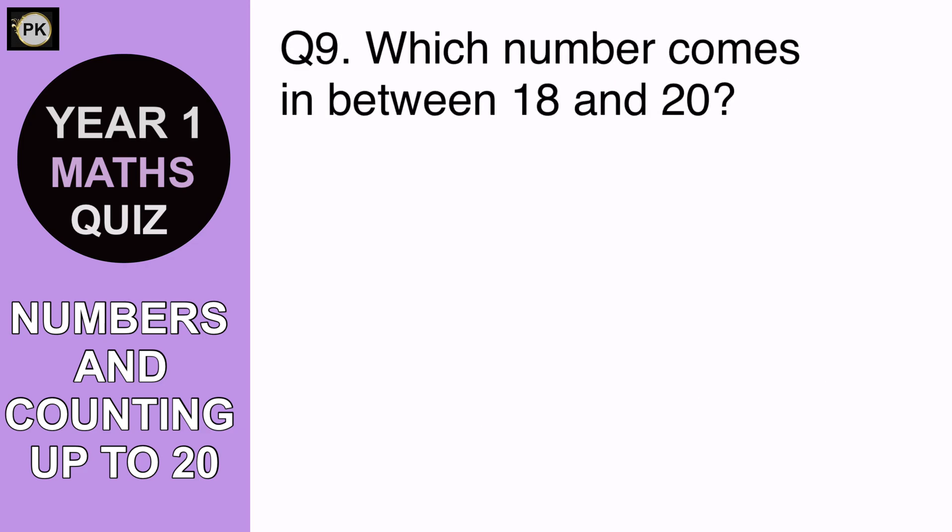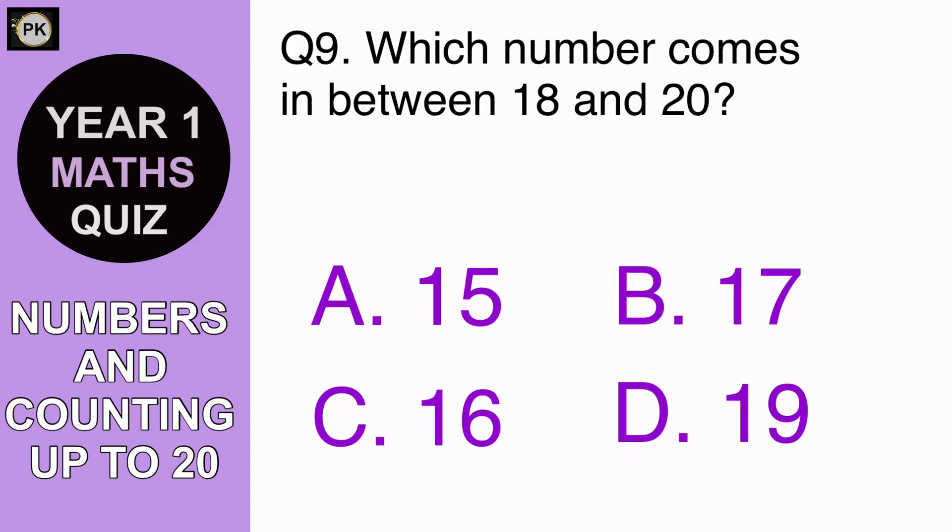Which number comes in between 18 and 20? A 15, B 17, C 16 or D 19. And the answer is D 19.